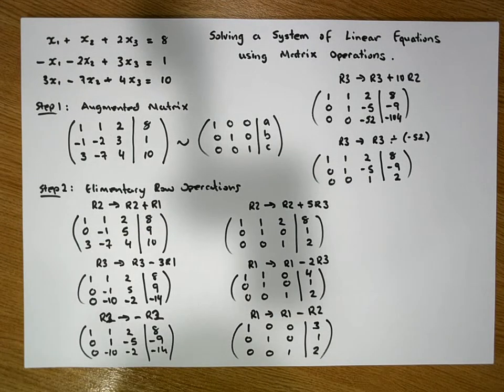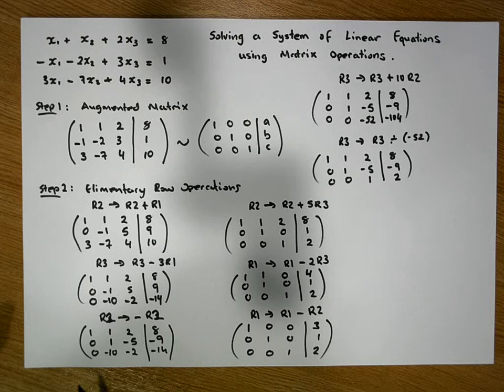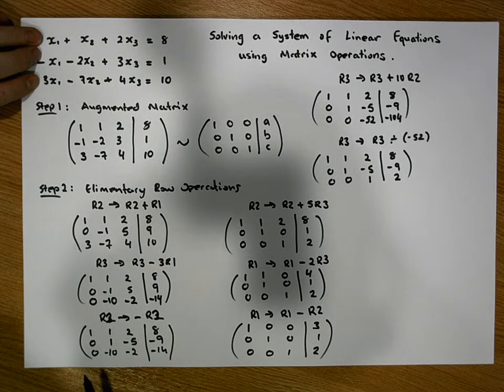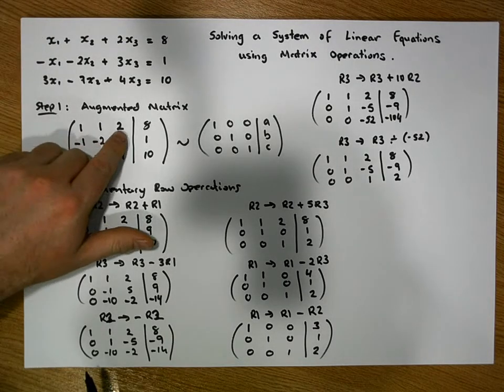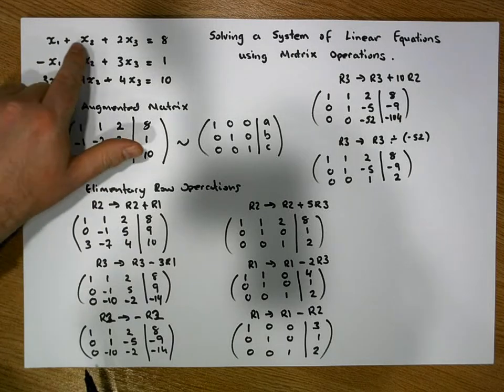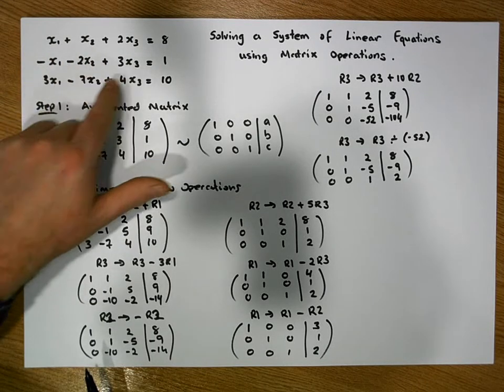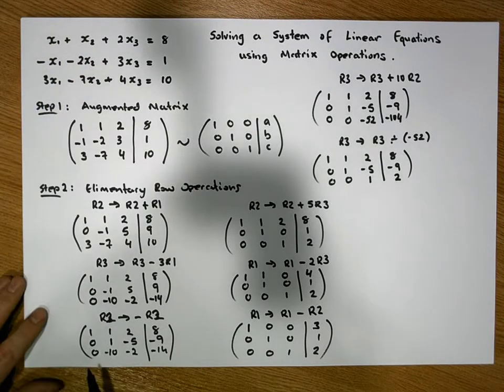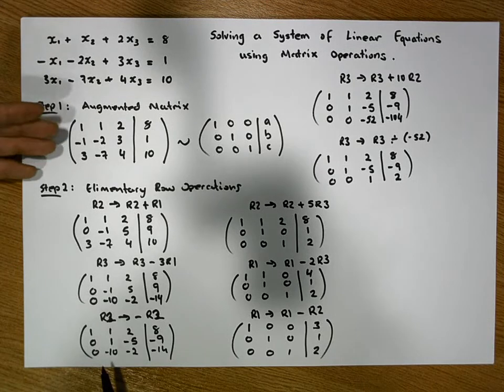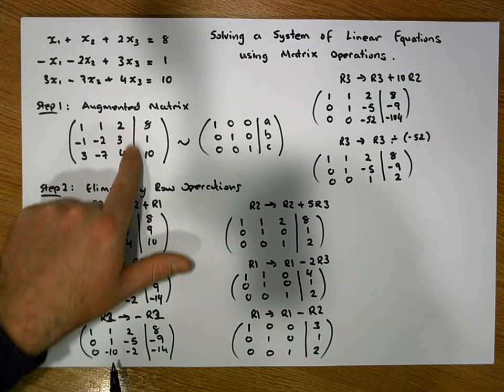So let's just reflect back on this. We had a system of linear equations where each entry in the matrix represents the coefficient terms of these particular unknowns. We created the augmented matrix where we put the constant terms to the right-hand side of this bar.